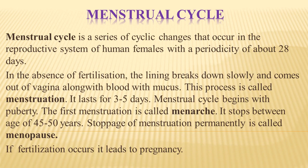If fertilization does not happen, the next event is the menstrual cycle. This starts at puberty in females and involves a series of cyclic changes in the reproductive system with a periodicity of about 28 days. In the absence of fertilization, the lining of the uterus — the endometrium — breaks down and comes out through the vagina along with blood and mucus in a process known as menstruation, lasting about 3 to 5 days. The first menstruation is called menarche, and the stoppage of menstruation between ages 45 to 50 years is known as menopause.